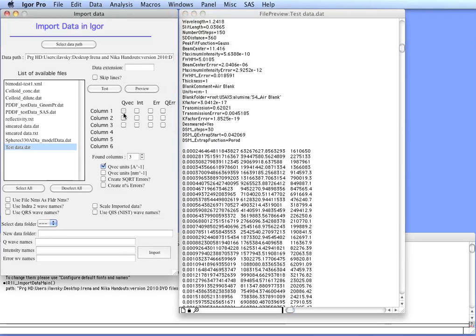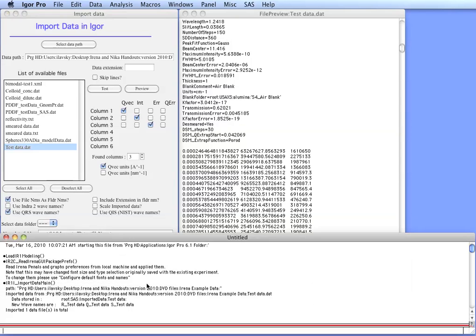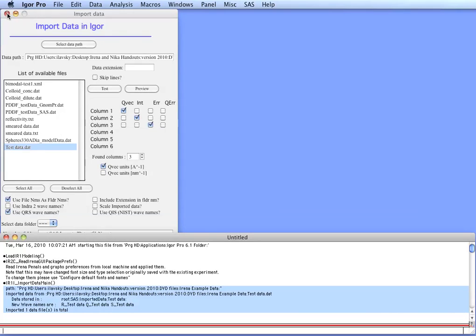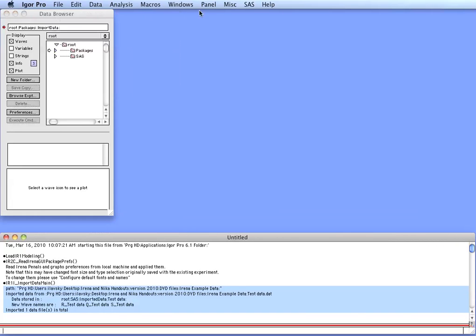So the first column is Q, second is Intensity, and third is Error. Let's use these two checkboxes so the file is named easily for us to understand. If you hit enter import here, you now have a record down here which tells you what has happened. It has imported one data file and created new waves which we can now use. So now we have the data inside an Igor experiment.